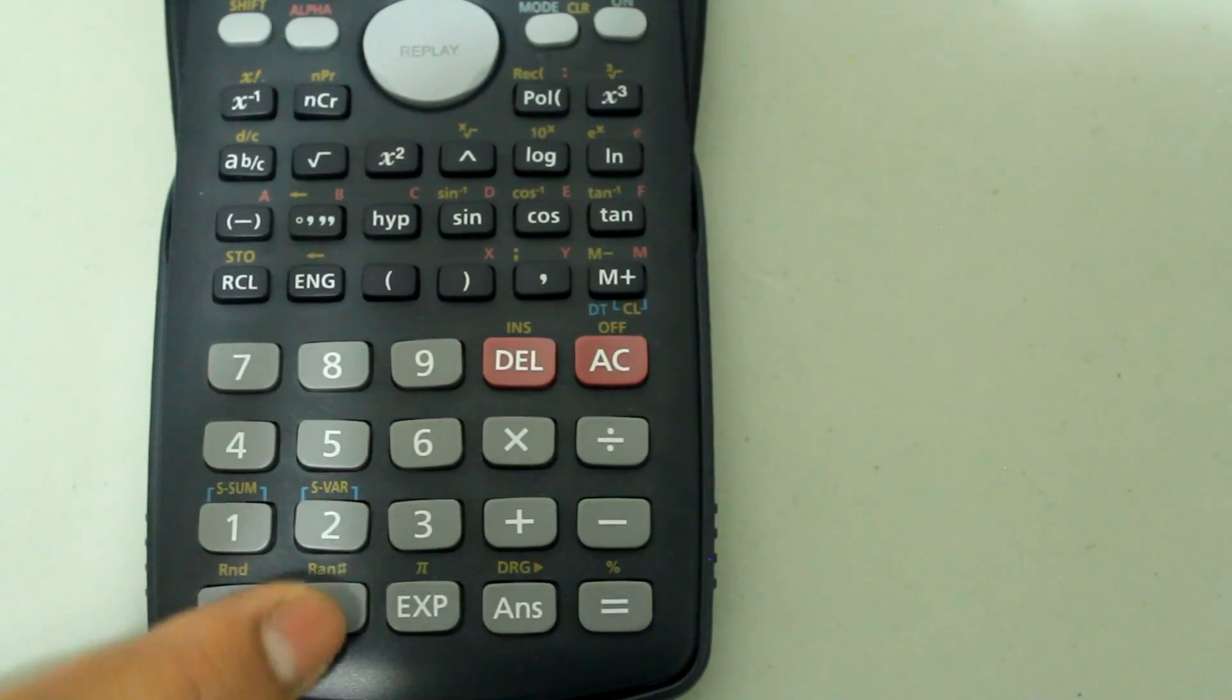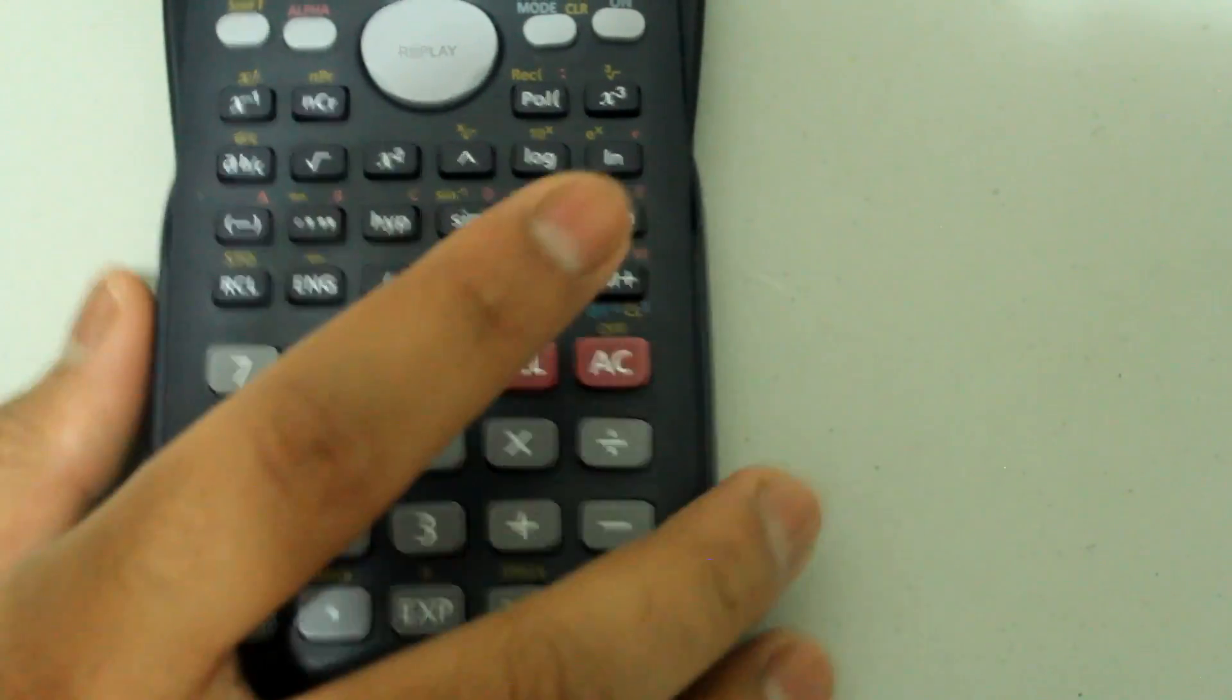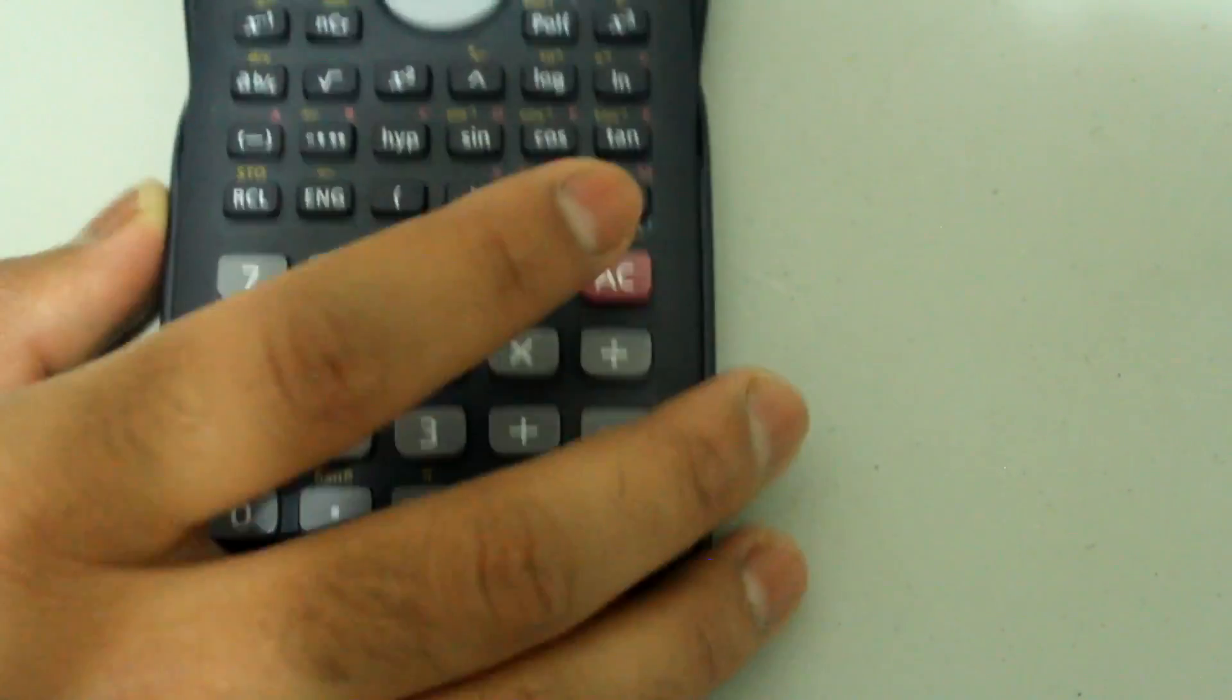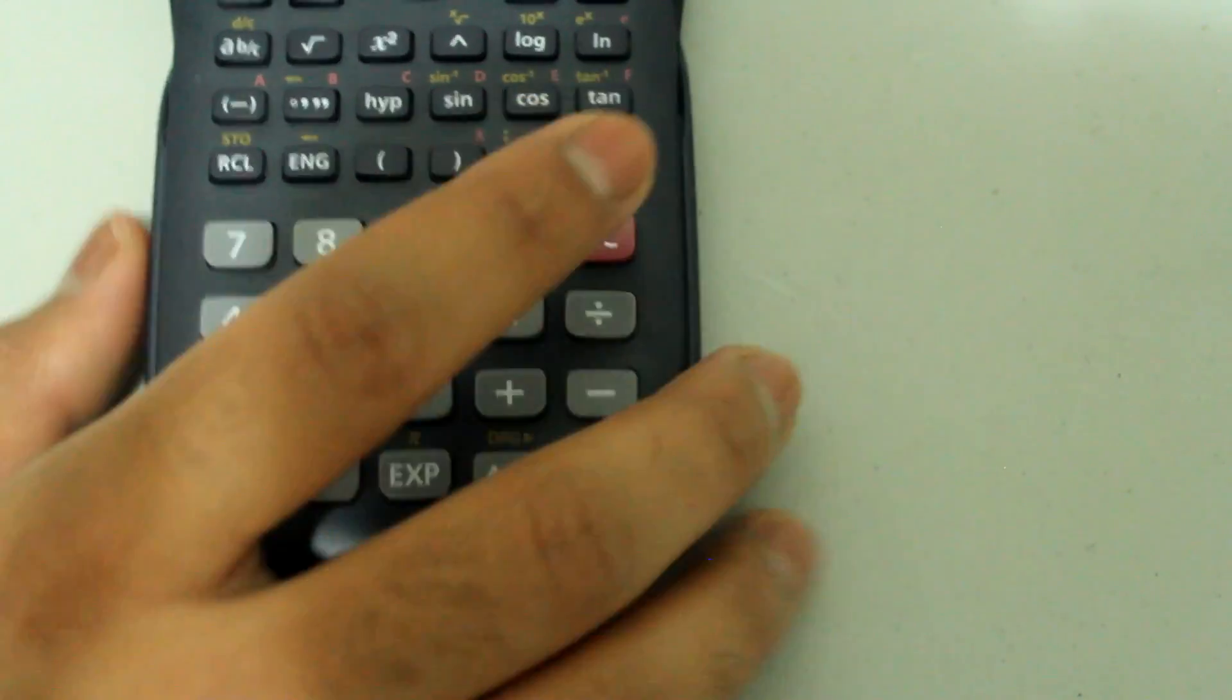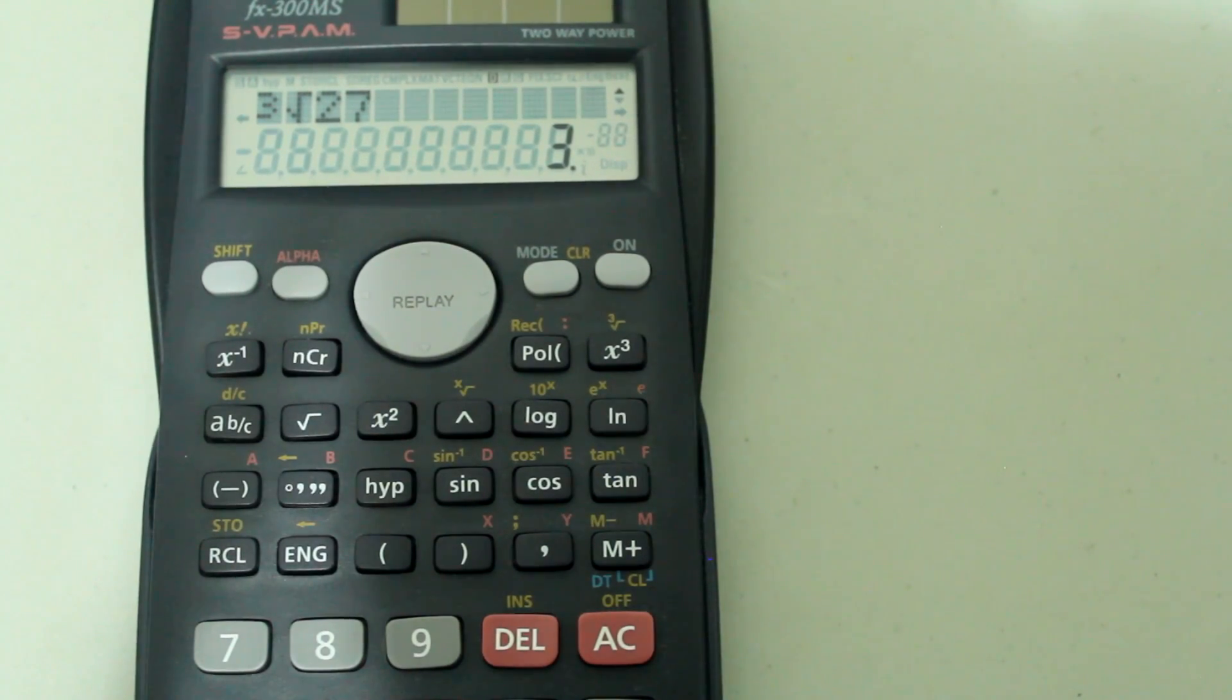Now go to your keypad and type in 27 and the screen looks like this. Hit equals and we get the cube root of 27 as 3, which we know is correct.